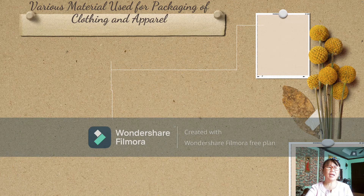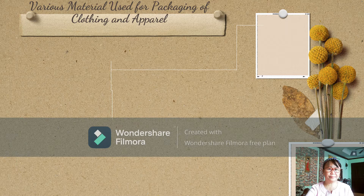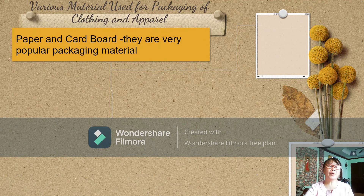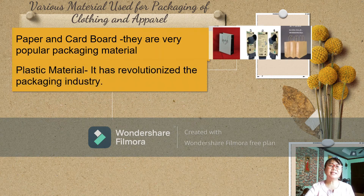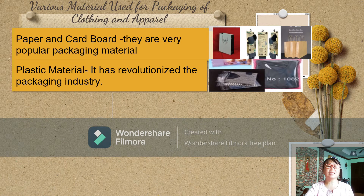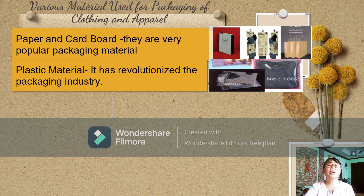Now, what do you think are the various materials used for packaging of clothing and apparel? What are the available materials that you can find in your locality? We have paper and cardboard — they are very popular packaging materials. We have plastic material, which has revolutionized the packaging industry. However, we have to beware of using too much plastic material because if we do not dispose of or recycle it properly, it can destroy our environment.